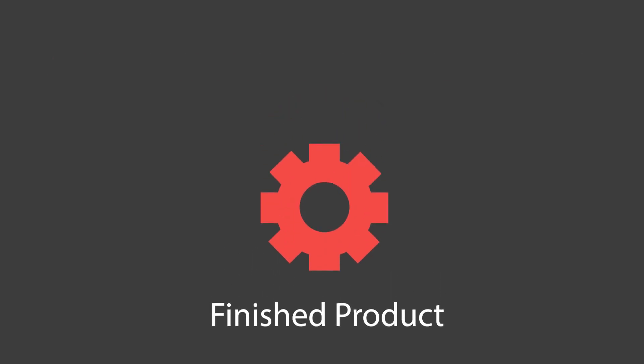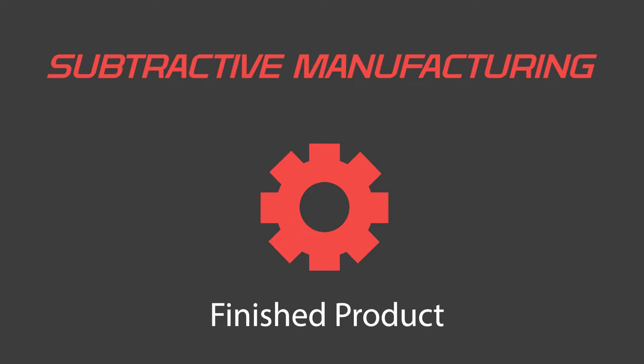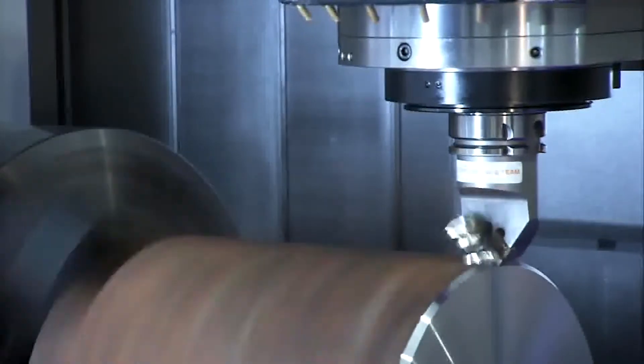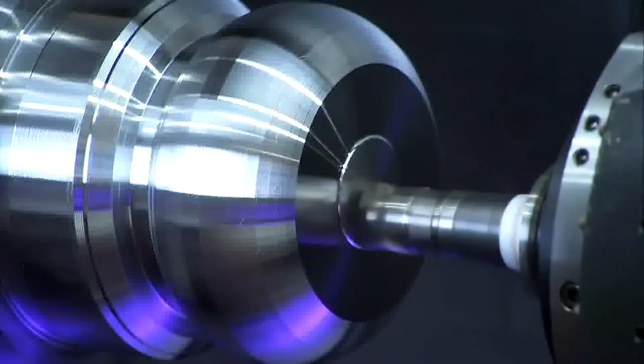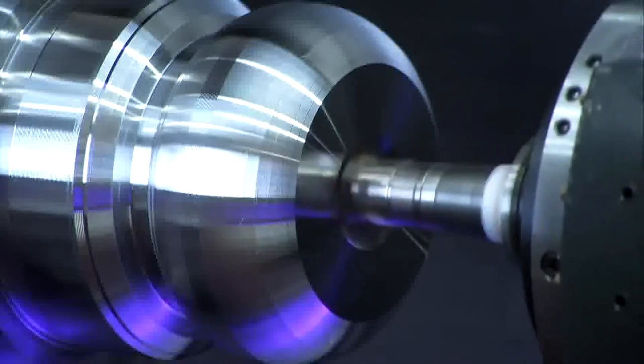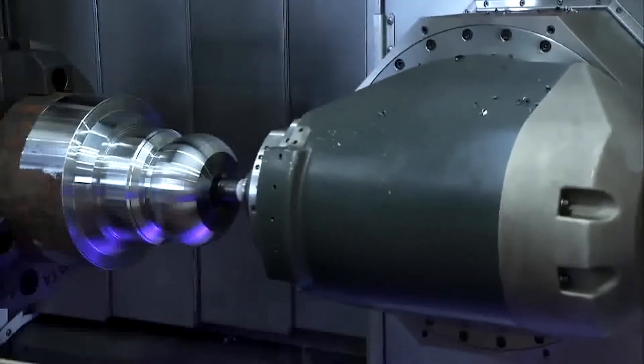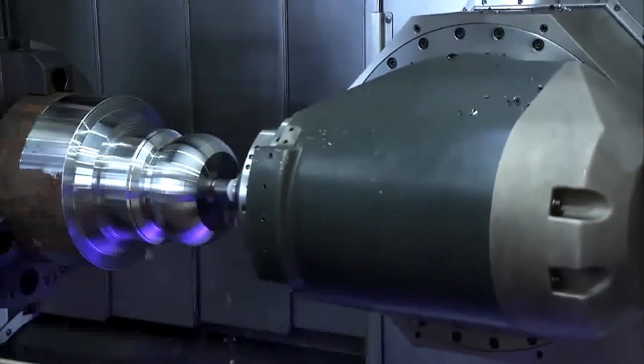This is traditional machining. It is called subtractive manufacturing because you have a block of material and then you take material away until you have remaining the thing that you want. That's how most stuff was manufactured.